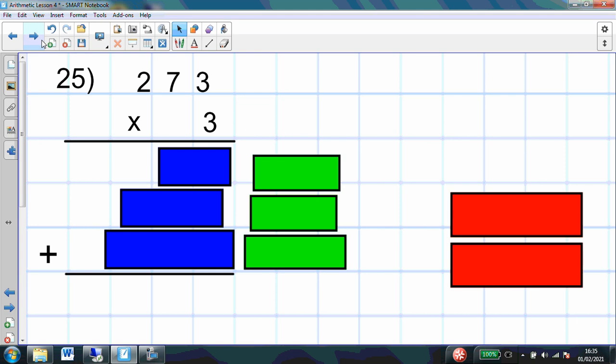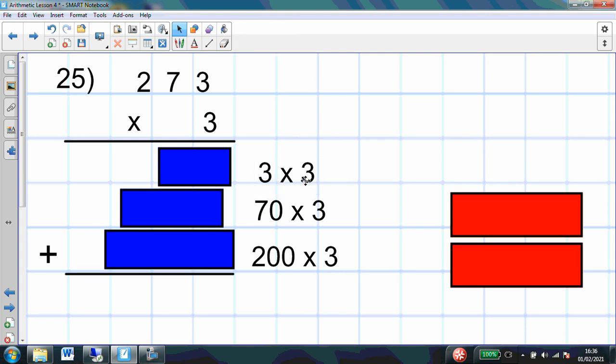And our last one. Very similar to question 23. We're multiplying, but this time I'm multiplying a 3 digit number. That doesn't change too much really, apart from that we will have 3 numbers to add together. We're going to start as always by partitioning. What am I going to partition 273 into? Have a go and see if you can partition that. Well done. If you said we would partition 273 into 200, 70, and 3.